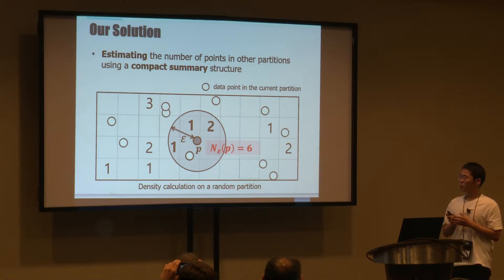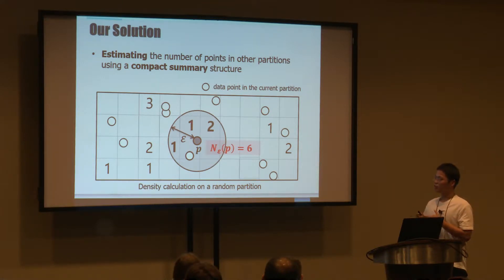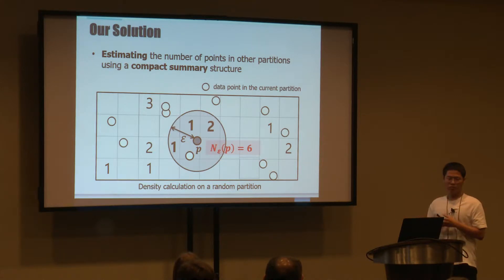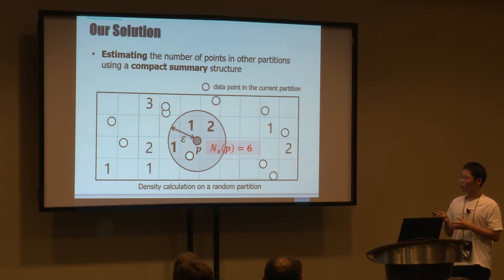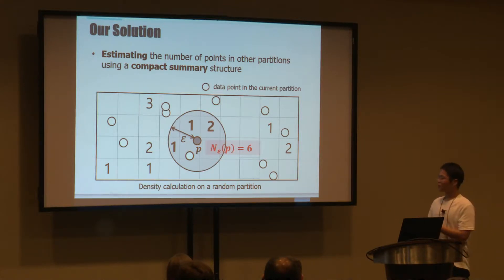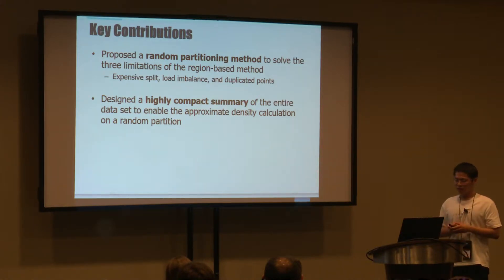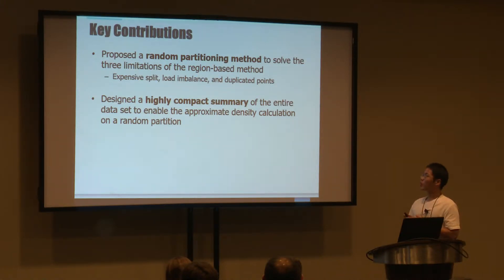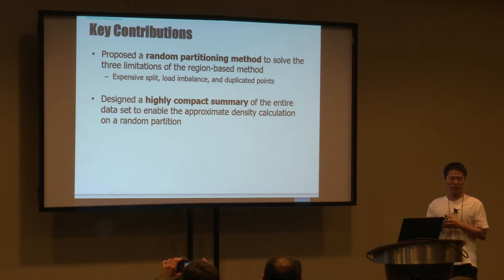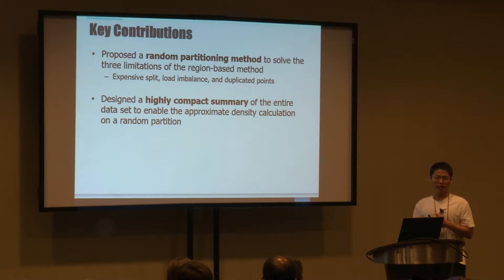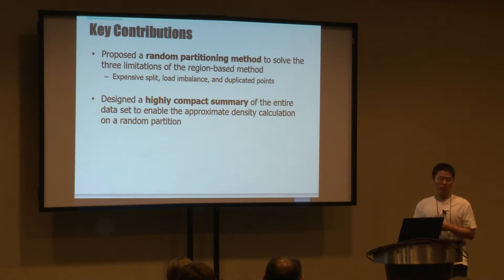Our solution is to estimate the number of points in other partitions using a compact summary. The compact summary stores information about how many points are located in each small area. So we can approximately count the number of epsilon-neighbors of a given point P. Our contributions are: we propose a random partitioning method to solve the previous limitations, and we designed a highly compact summary of the entire dataset to enable approximate density calculation on random partitions.